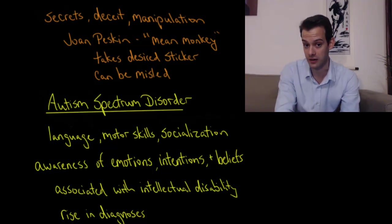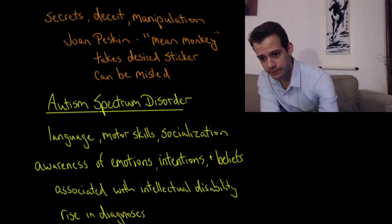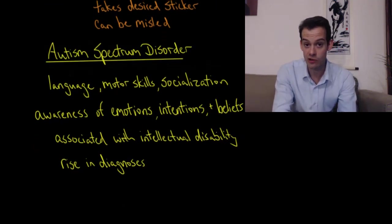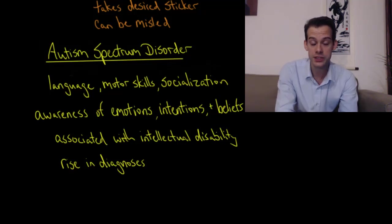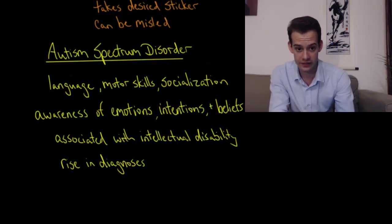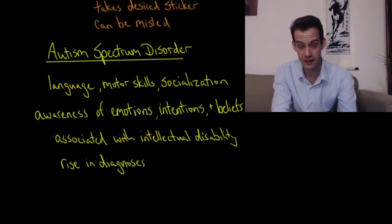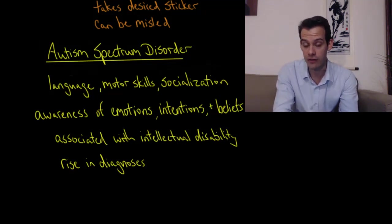They're able to recognize that they can know something that the monkey doesn't know. The last related idea here is autism spectrum disorder. This is a neurodevelopmental disorder that's associated with deficits in language, motor skills and socialization. One aspect of autism spectrum disorder seems to be deficits in awareness of the emotions, intentions and beliefs of others. Things like false belief tests can be used to partially assess autism spectrum disorder.